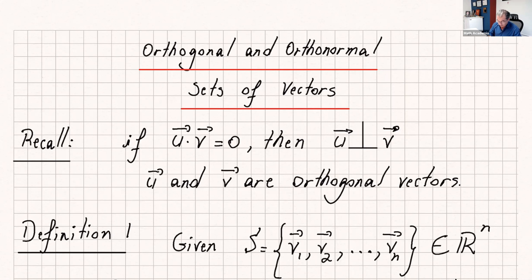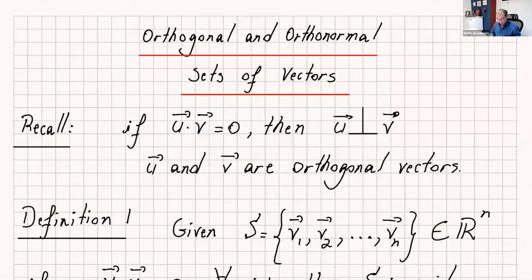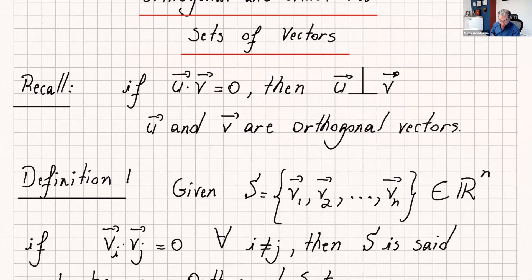Hi everyone and welcome to this lecture. In this lecture I want to go over orthogonal and orthonormal sets of vectors. Recall when we had u dot v equals zero, then we know that vector u and vector v are perpendicular or orthogonal. We say u and v are orthogonal vectors.